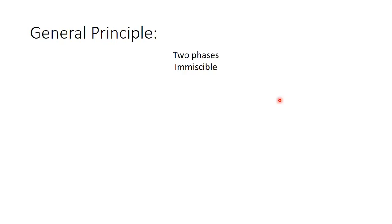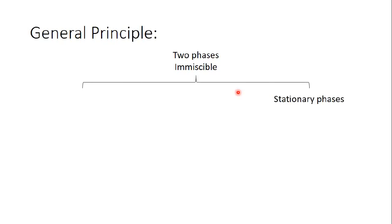When performing chromatography, there are two phases, and this is very important. The two phases must be immiscible — meaning they cannot mix with each other. The first is the stationary phase, which is fixed and does not move. The second is the mobile phase, which moves, as its name implies.